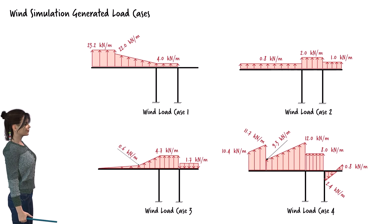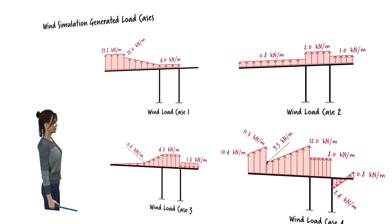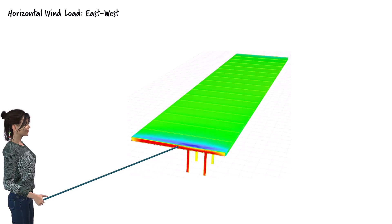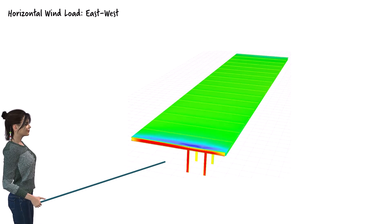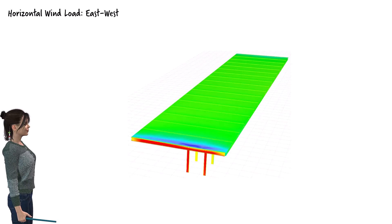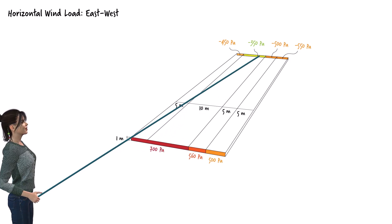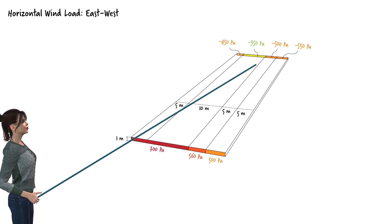In addition to in-plane member forces caused by these loads, the columns could experience significant out-of-plane torsion due to asymmetrical horizontal wind pressure. When wind travels from east to west, the exterior beams supporting the roof on either side of the canopy are subjected to horizontal wind pressure, which is typically not uniformly distributed. For our structure, we can approximate the horizontal wind pressures using the simulation software. The positive pressure on the east side of the roof can be approximated using three regions, each having a uniform pressure distribution, while the west side uses four regions to capture the variation in pressure distribution.